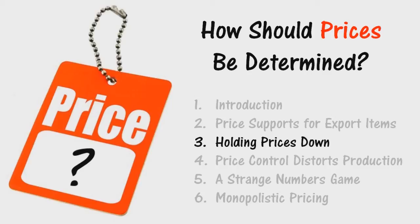If a government continues to create more currency while rigidly holding down prices, it will do immense harm. And even if the government is not inflating the currency but tries to hold absolute or relative prices just where they were — or has instituted an incomes policy or wage policy drafted according to some mechanical formula — it will do increasingly serious harm. For in a free market, even when the so-called price level is not changing, all prices are constantly changing in relation to each other, responding to changes in costs of production, supply, and demand for each commodity or service.